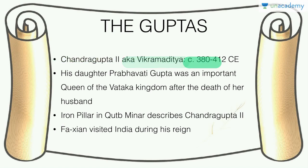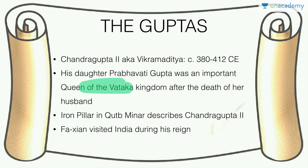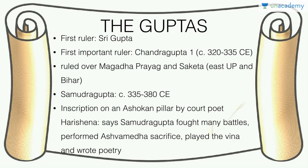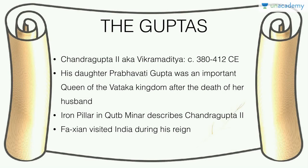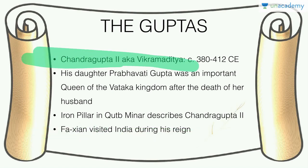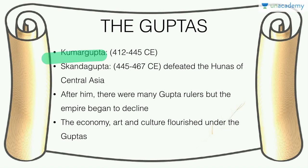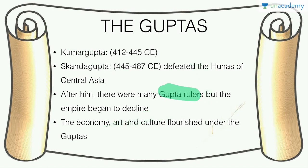Then came Chandragupta II, also known as Vikramaditya, ruling from 380 to 415 CE. His daughter Prabhavati Gupta was a Vakataka queen who ruled in her own right after her husband Rudrasena passed away. The iron pillar in Qutb Minar complex describes Chandragupta II. Be very clear which Chandragupta is which. Fa Xian, the Chinese pilgrim, visited India during the reign of Chandragupta II. After him came Kumaragupta and Skandhagupta, who defeated the Hunas of Central Asia, after which small and weak Gupta rulers caused the empire to decline.